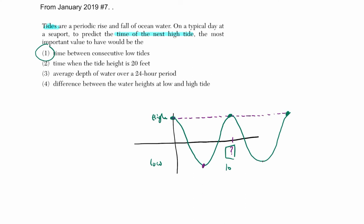If you knew this low tide to this low tide, that distance, it gives you the same value. But if they want to predict the next high tide, if you knew how far apart the low tides are, you know halfway between them is the high tide. Same reasoning.